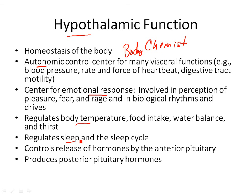The hypothalamus helps regulate the sleep cycle and controls the release of hormones — this is what you'll really focus on in 202. The pituitary gland is divided into the anterior pituitary and the posterior pituitary. The hypothalamus controls the release of hormones made by the anterior pituitary, and it produces the hormones that the posterior pituitary releases. So the hypothalamus is very important — the body's chemist, homeostasis — it does lots and lots of things. Really important part of the brain, and really small.